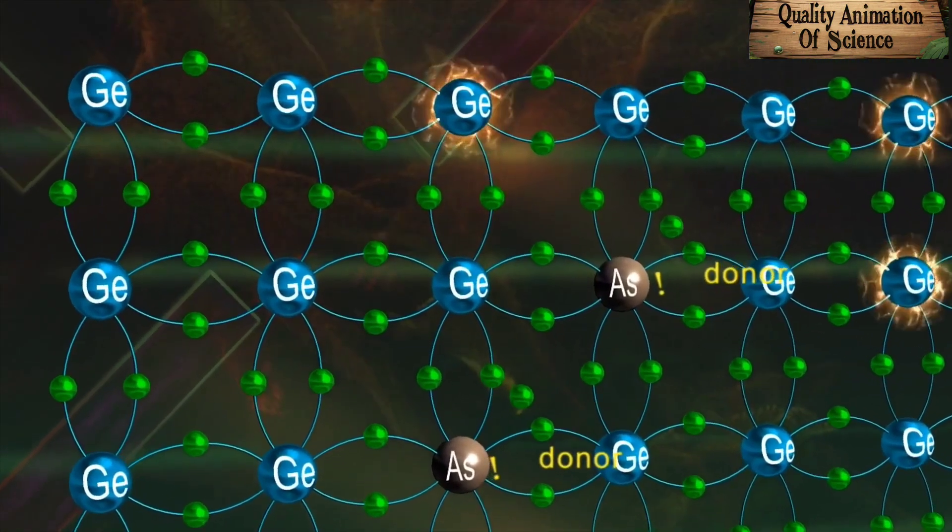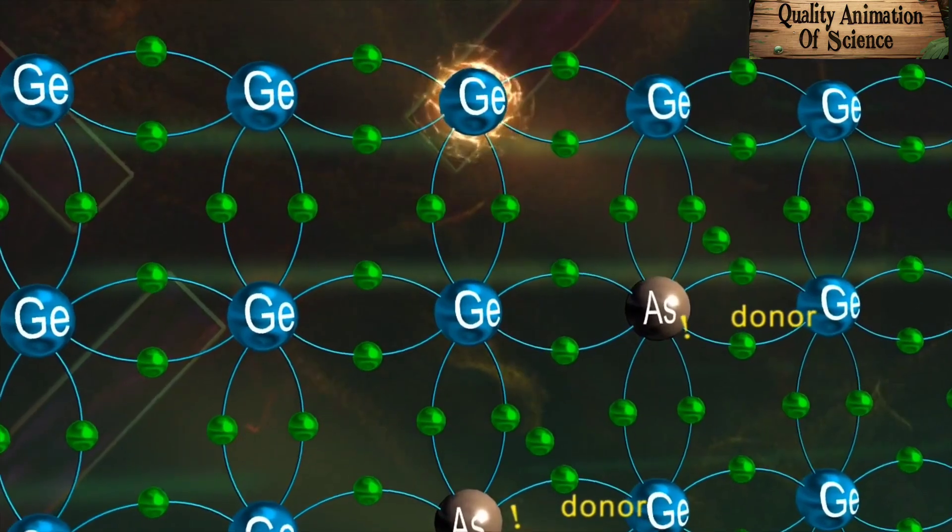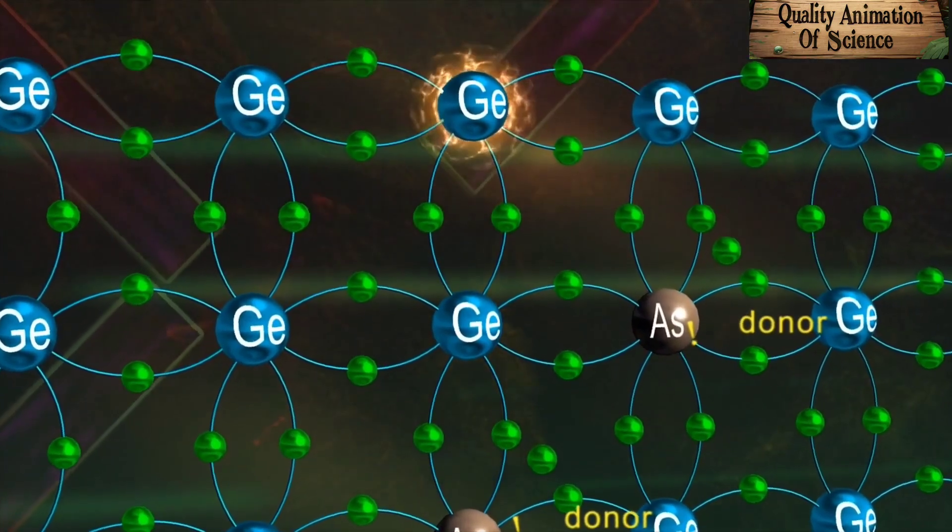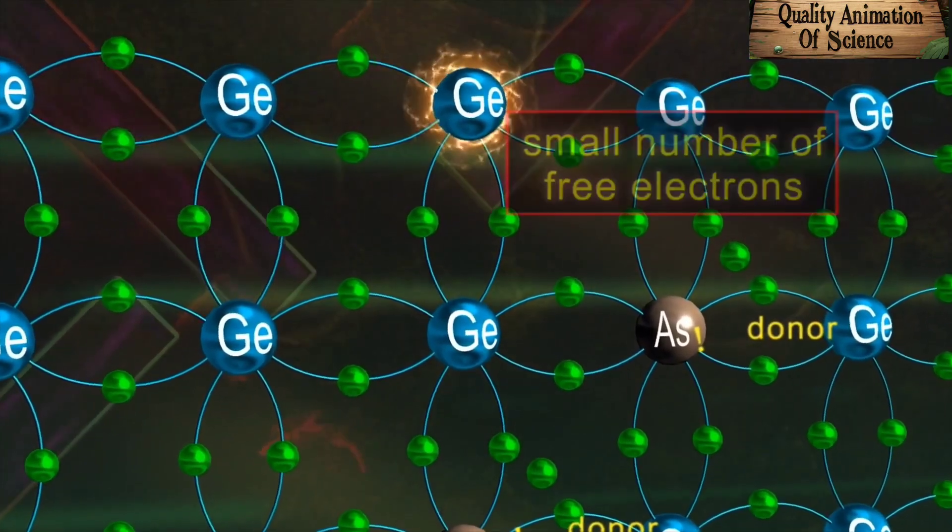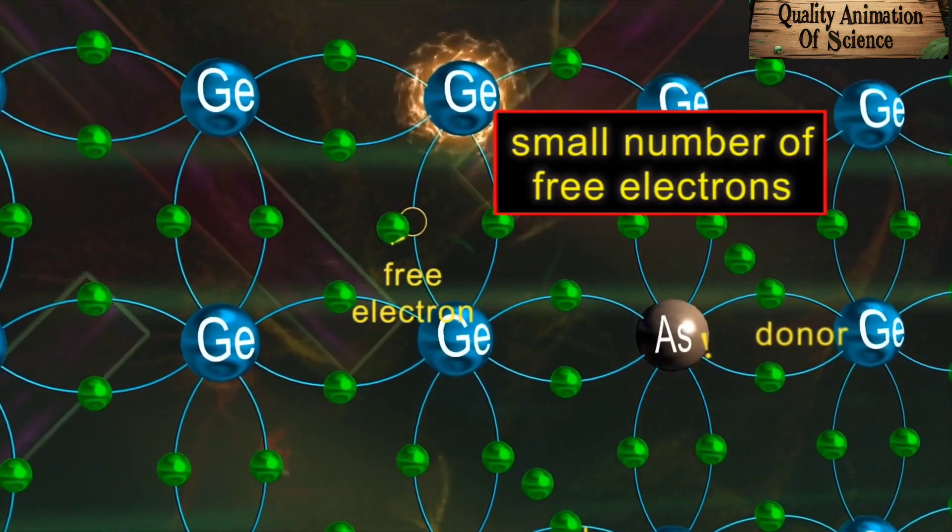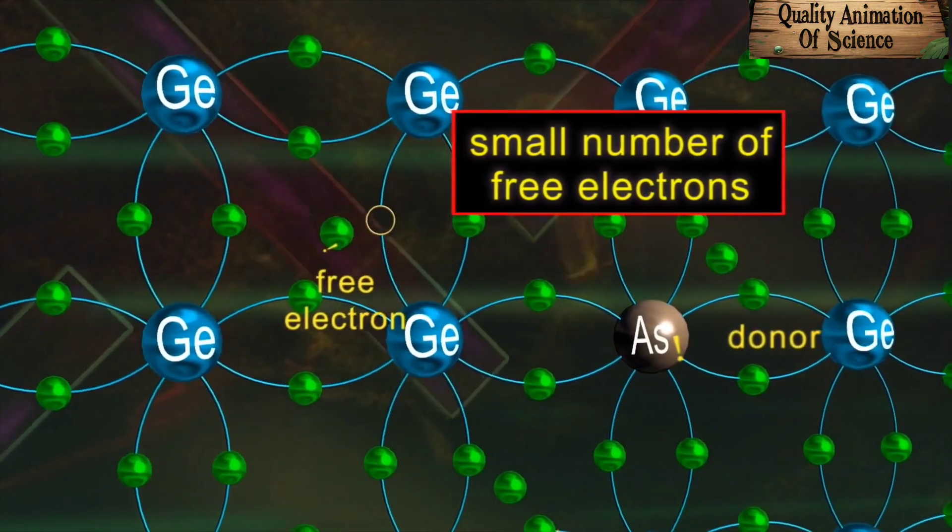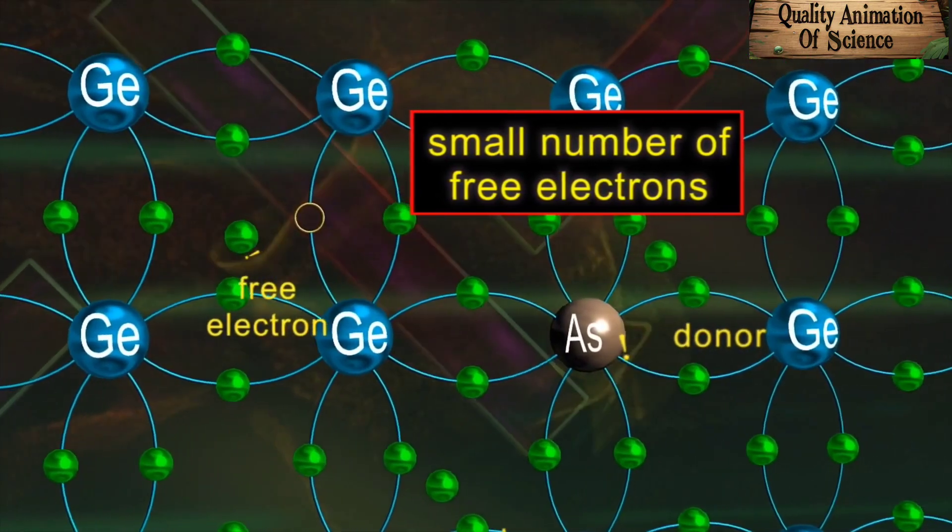In addition to this, some breaking of the bonds due to thermal oscillations also contribute a small number of free electrons. This number is much less than that obtained from the donors.